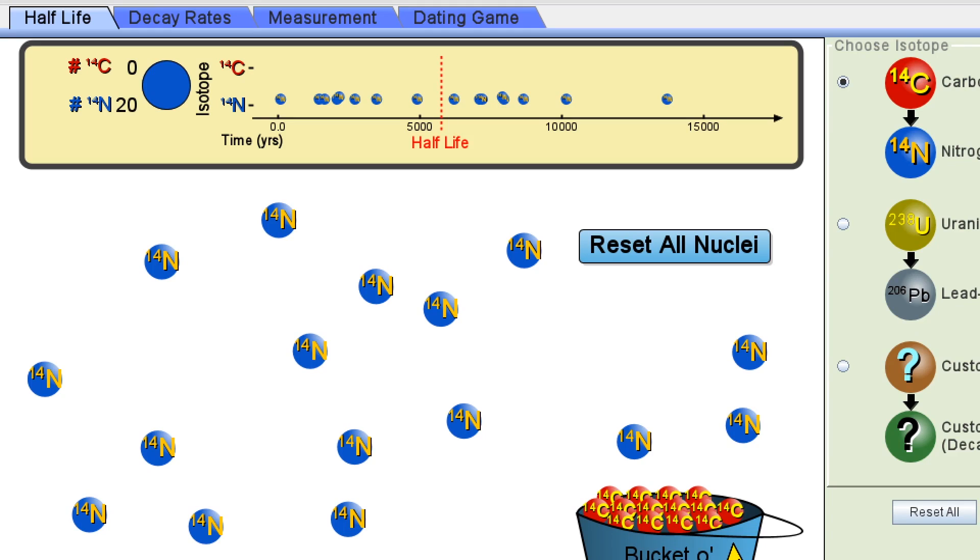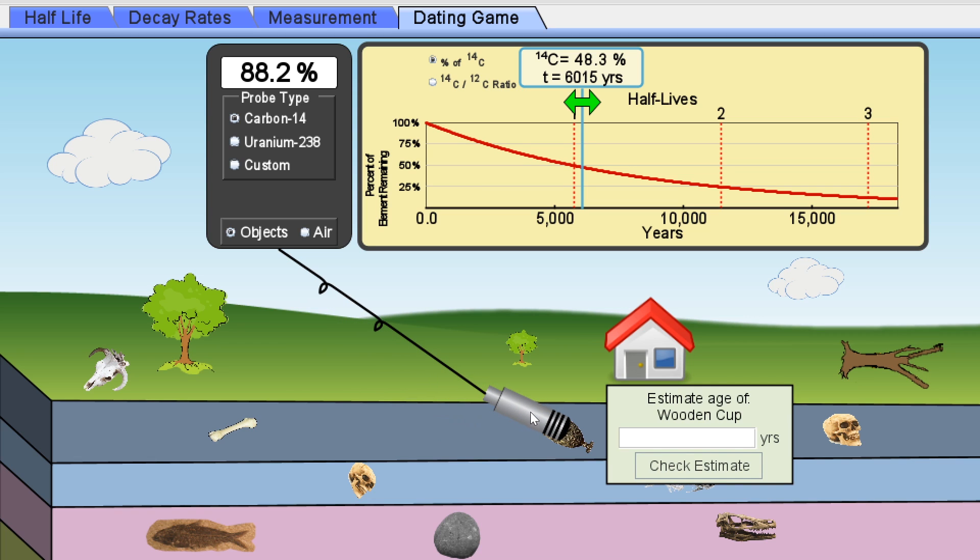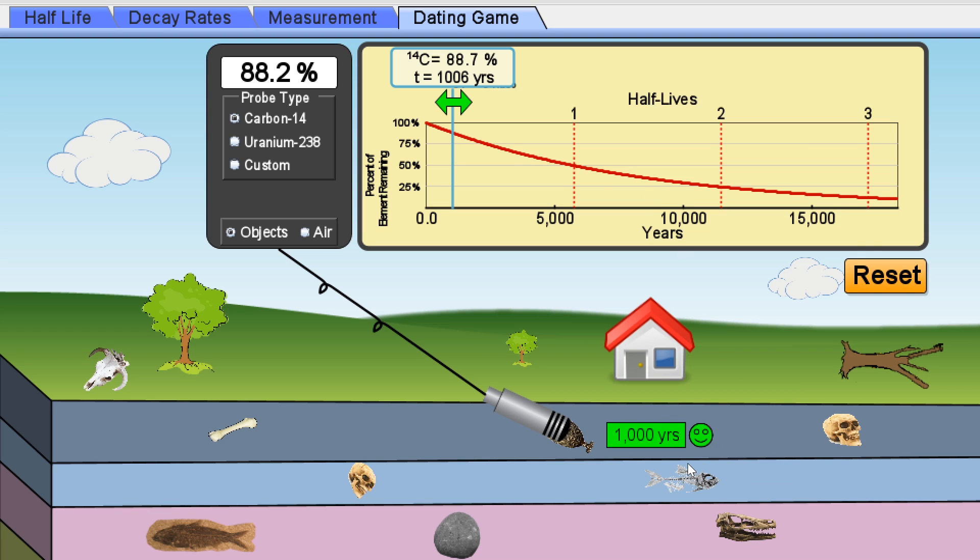I'm actually posting the link for this really interesting simulation slash radioactive dating game that kind of shows you how all of this works. And you can also try all of this by yourself by using this dating game here. And by then trying to estimate the age of these different artifacts when you're already given the amount of carbon-14 present in a certain object. Like for example, here we can see that because there's about 88% of carbon-14 on the inside, it's most likely around 1000, yeah, I guess just 1000. It's approximately 1000 years old. So here we can check the estimate and it's going to tell us that we are correct.